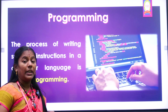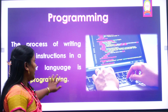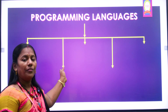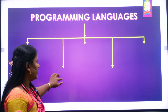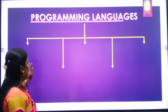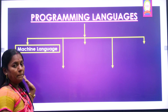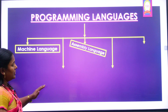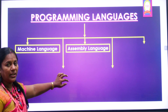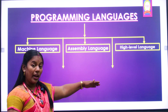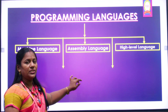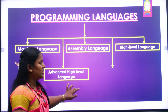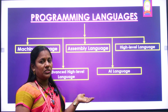We have different types of programming languages. We will see them one by one. We have five types of programming languages: machine language, assembly language, high level language, advanced high level language, and AI language.